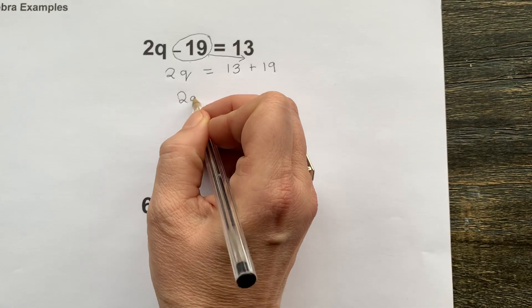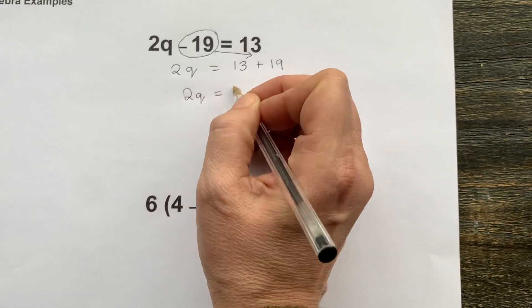Therefore we can work out that 2q equals 32.